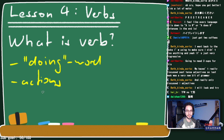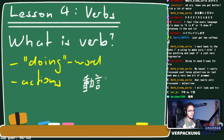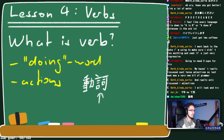In Japanese, verbs are called doshi. If you look at the word doshi written out, 'do' means to move, and 'shi' means word or part of speech — so it's essentially a 'movement word,' which parallels the English concept of 'doing words.'